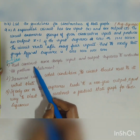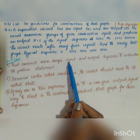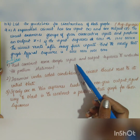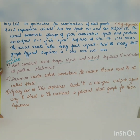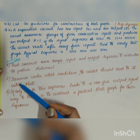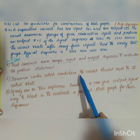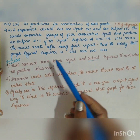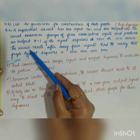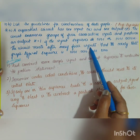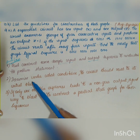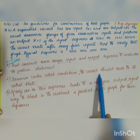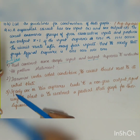Step one: construct some sample input and output sequences to understand the problem statement. Step two: determine under what conditions the circuit should reset to its initial state. For example, in this problem it is given that the circuit resets after every four inputs. Similarly, you have to identify what condition causes a reset to the initial state.